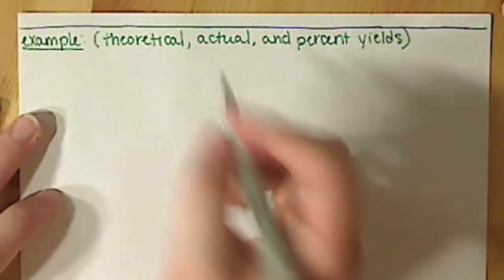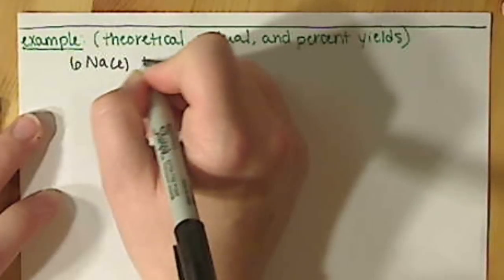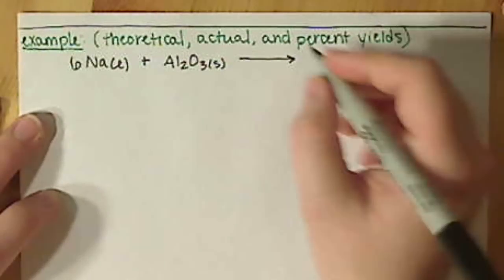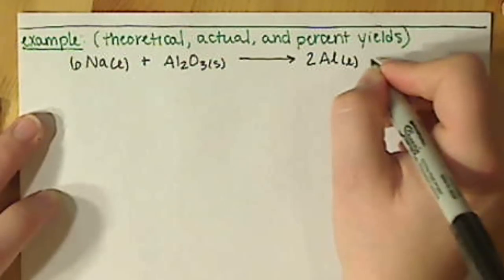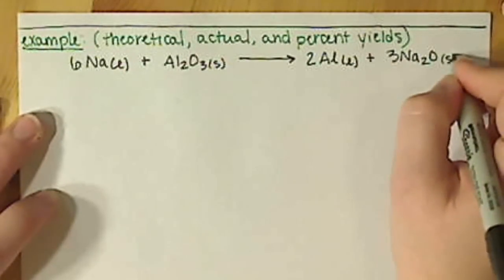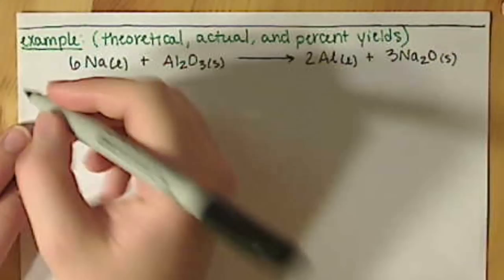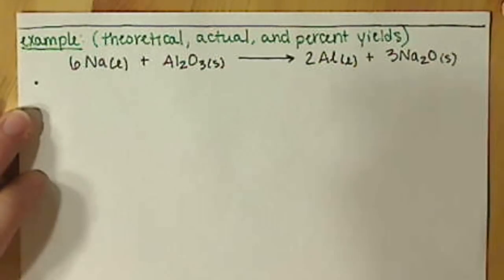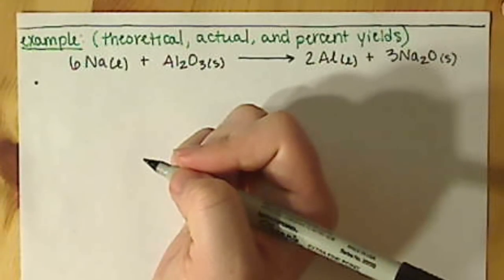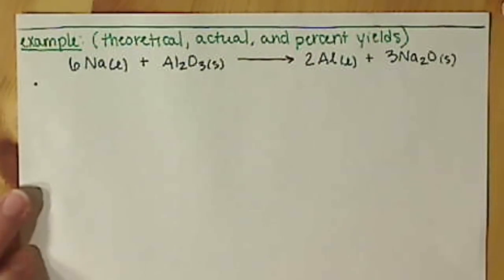Alright, so we're going to look at a different reaction now. Let's take some sodium and react that with aluminum oxide and we're going to form aluminum and some sodium oxide. So, first question says when 5.52 grams of sodium is heated with 5.10 grams of aluminum oxide, the limiting reactant is sodium. What is the theoretical yield of aluminum produced?